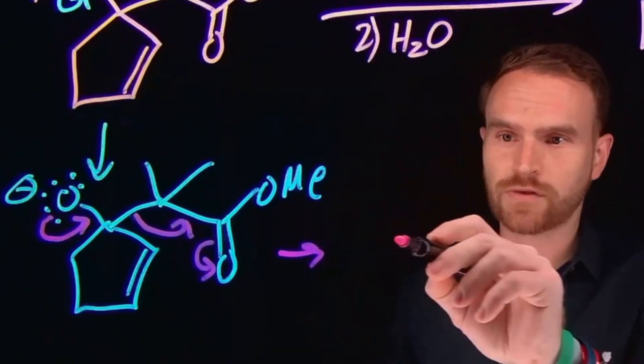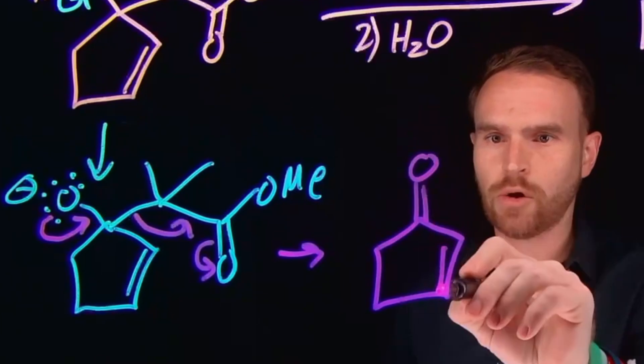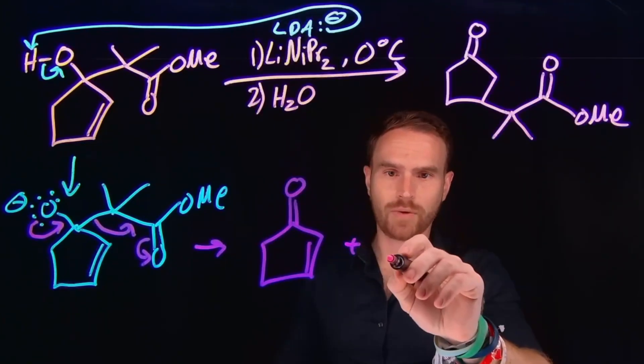So then after this transformation, what you're left with is an alpha beta unsaturated ketone or an enone. And you're also left with a brand new enolate.